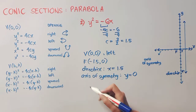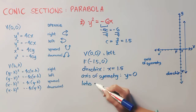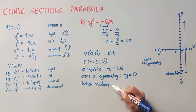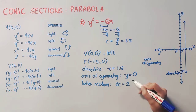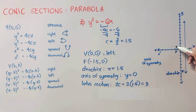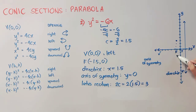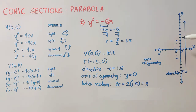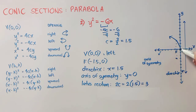For the latus rectum, we use 2c = 2 × 1.5 = 3. Counting 3 units up from the focus gives the endpoint (−1.5, 3), and 3 units down gives (−1.5, −3). We connect the endpoints of the latus rectum to the vertex to create the parabola. This is our final answer.